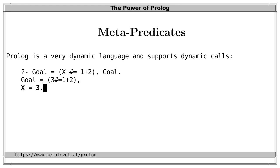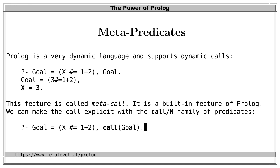So Prolog is a very dynamic language and supports dynamic calls. This feature is called metacall and it is automatically available in Prolog as a built-in feature. We can make the call explicit with the call/N family of predicates. So, this is equivalent to what we had above.